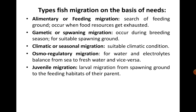Osmoregulatory migration is a kind of movement that occurs when water and electrolyte imbalance occurs. Fish try to manage the water and electrolyte balance by moving from sea to fresh water and vice versa — that is, from fresh water to sea. Juvenile migration includes larval migration from the spawning ground to the feeding habitats of their parents.